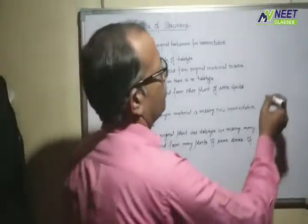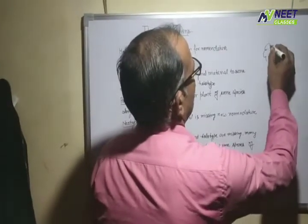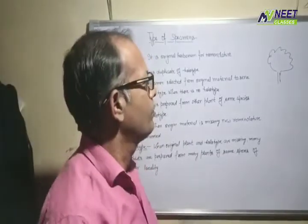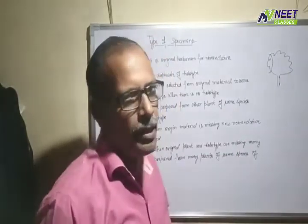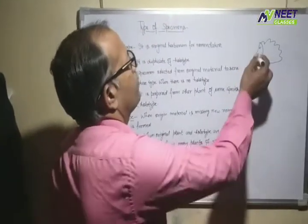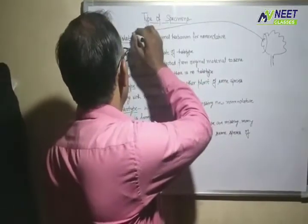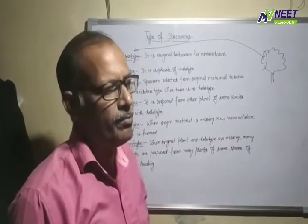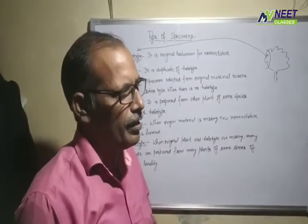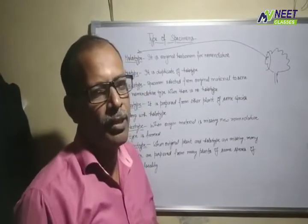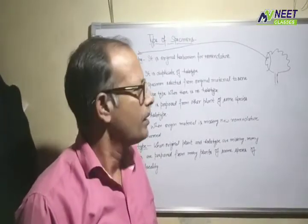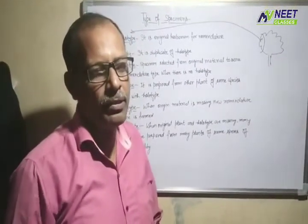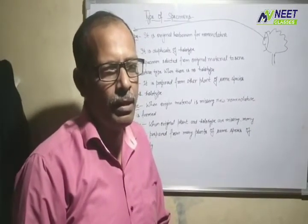First of all, a new plant can be used in a new location and can be used to create a type or a herbarium. This is called a Holotype. Holotype means that the herbarium is used for the new name of a plant. The herbarium is used for study.